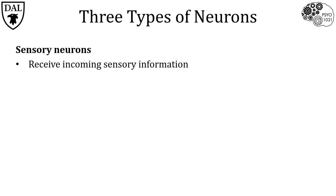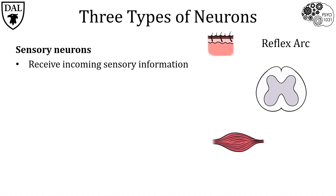For example, in this reflex arc, we have cutaneous sensory neurons that transmit the sense of touch from the skin into the spinal cord.